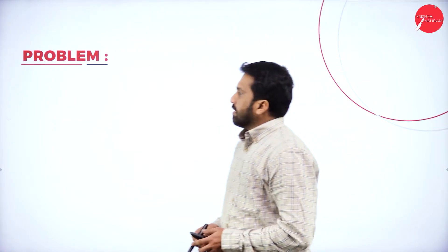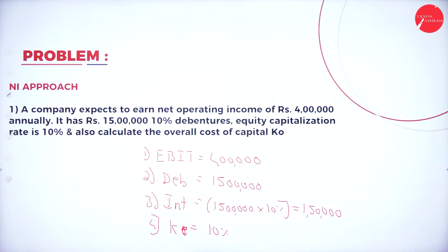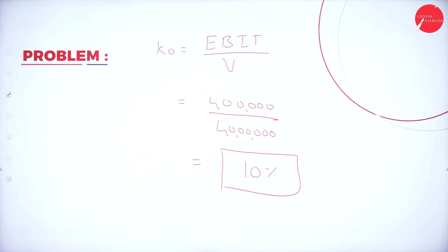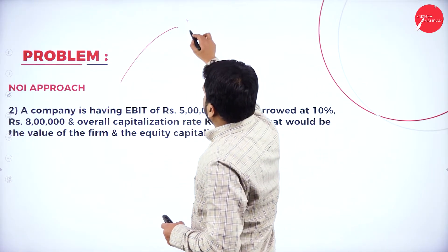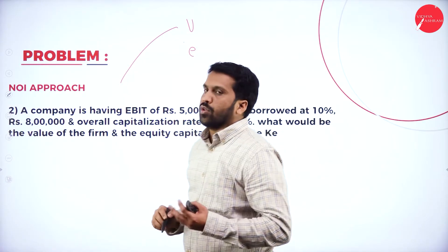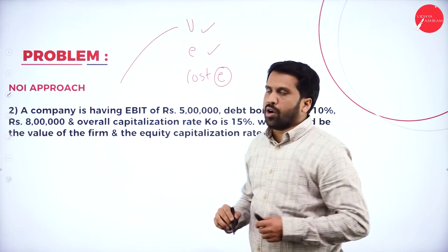Now we move to the NOI approach. Under NOI approach, we normally calculate value, then value of equity, and finally cost of equity. The formula for value is EBIT divided by KO. Equity is value minus debenture. Cost of equity formula is EBIT minus interest, whole divided by equity. These are the three formulas — easy.